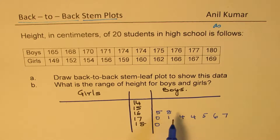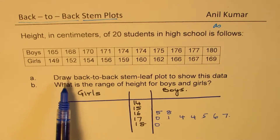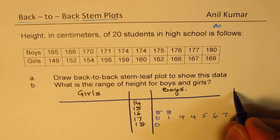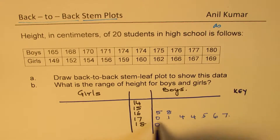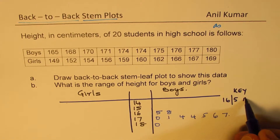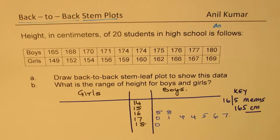So these are the 10 data elements for the boys. The key here is that 16 | 5 means 165 centimeters — that is what it means.